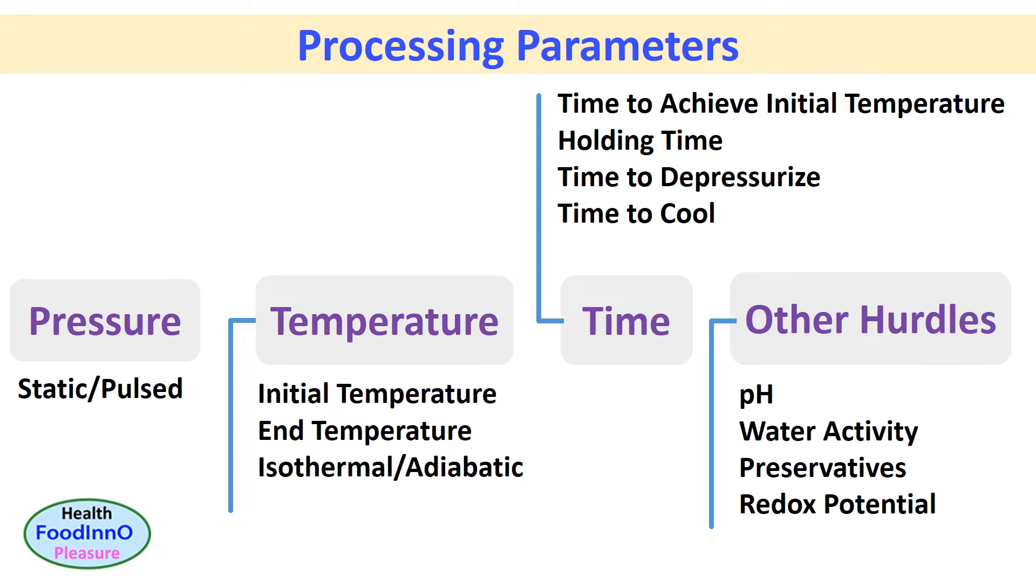Other hurdles could be pH, water activity, preservatives, and redox potential, that is oxygen level. In addition, conditions of the sample need to be considered in selecting the processing parameters, for example, initial spore load and type, and initial quality.